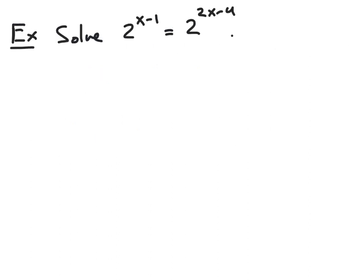For an example of using the one-to-one property for exponential functions to solve exponential equations, let's solve the equation 2 to the x minus 1 power equals 2 to the 2x minus 4 power. Notice that both sides of this equation are exponential terms with a base of 2.